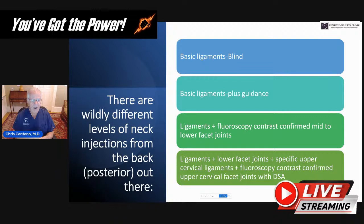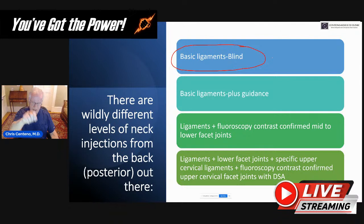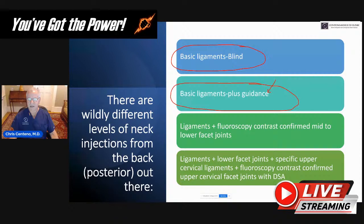There are wildly different levels of neck injections from the back — posterior — that are being done. The most simple type, and probably the most common, would be a blind basic ligament injection. Usually this is prolotherapy, where the doctor just takes a needle and tries to hit the back of the neck where the ligaments live. And then we've got a basic injection where there's some guidance used. We have a clinic in Florida that does this — they do basic ligament prolotherapy but use X-ray to make sure they're placing the needles in the right bony spots.